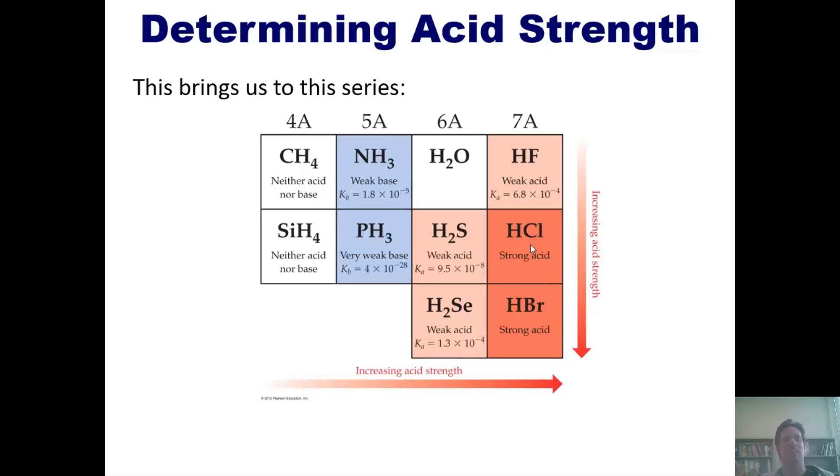Now what happens as we go down a column on the periodic table? HF is a weak acid. As I go down, HCl is a strong acid. What about HBr? HBr is an even stronger acid. So going down a column on the periodic table, acidity increases. Why is that? It's certainly not because of electronegativity, because fluorine is more electronegative than chlorine which is more electronegative than bromine. So it's got to be something else. What is it? It's size.